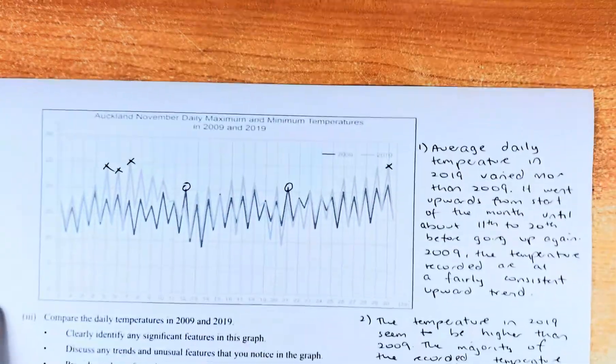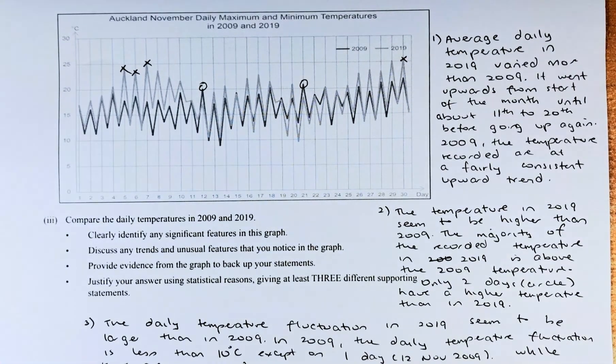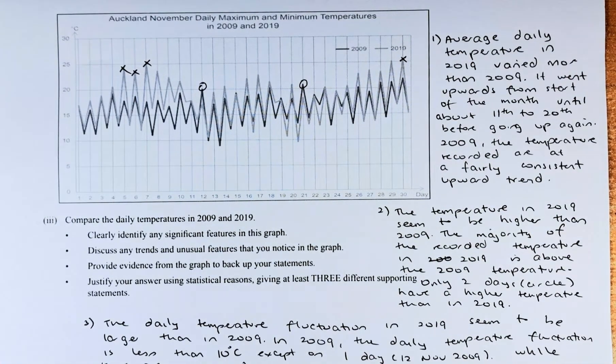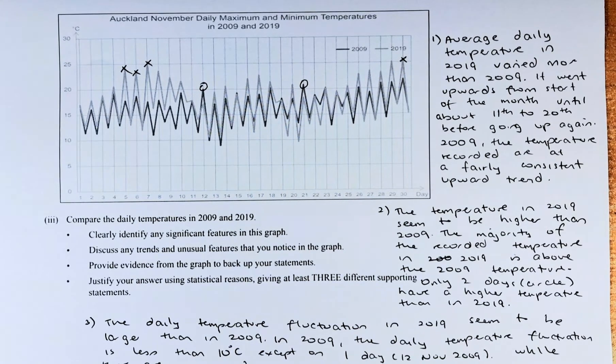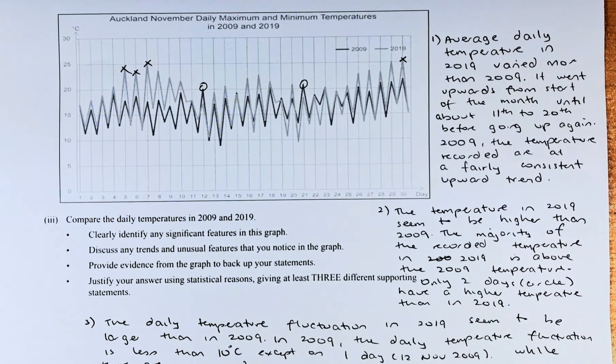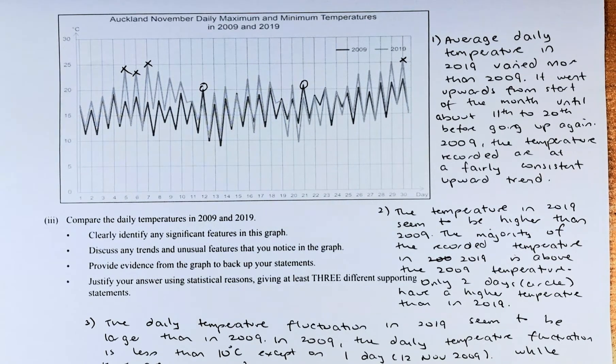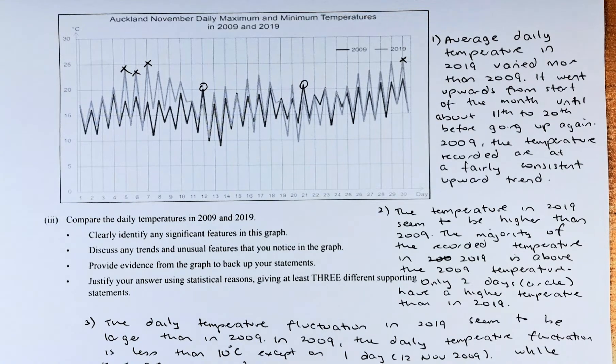Now we shall look at question 1A part 3, and this is a merit question. Compare the daily temperatures in 2009 and 2019. It means you're comparing the dark line and the lighter line. Clearly identify any significant features in the graph. Discuss any trend and unusual features that you notice in the graph. And provide evidence from the graph to back up your statement, justify your answers using statistical reason, give at least 3 different supporting statements.